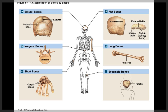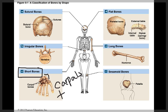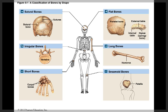The next bone shape is short bones. Short bones are roughly equal in length as they are in width. Short bones can be found in the wrist, as in the carpal bones, and in the foot, as in the tarsal bones.